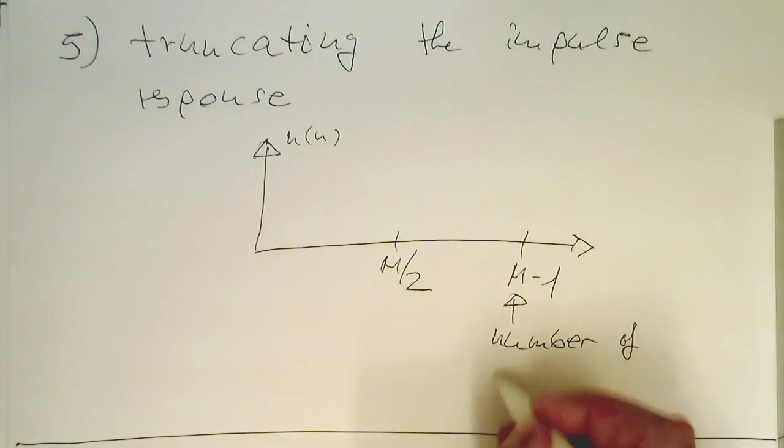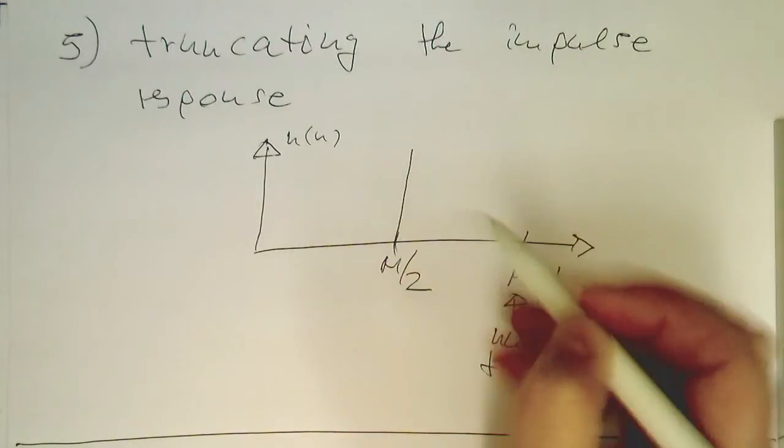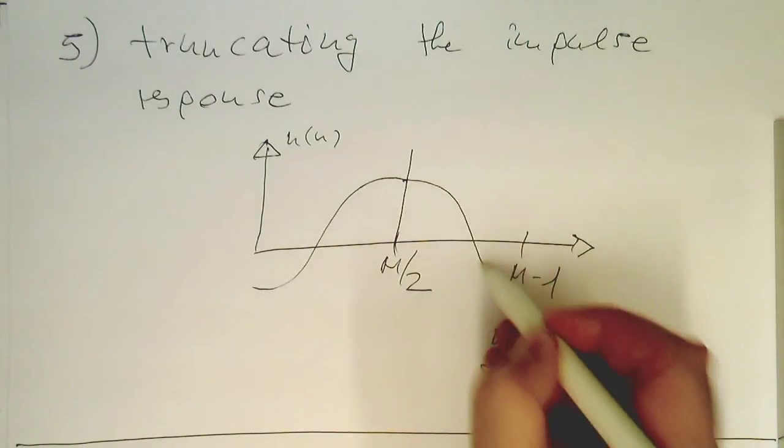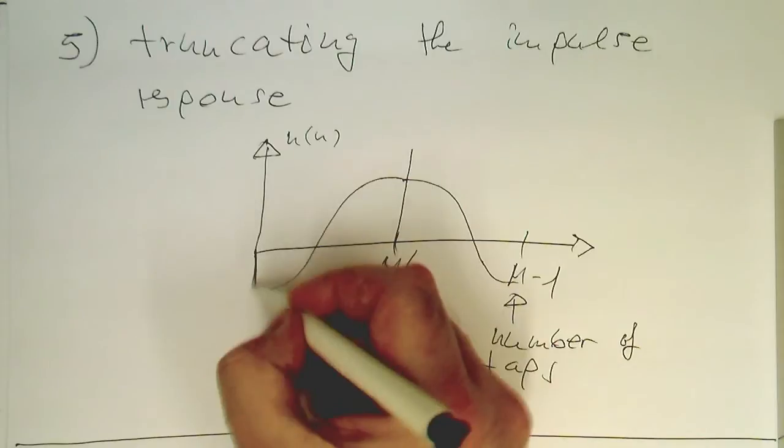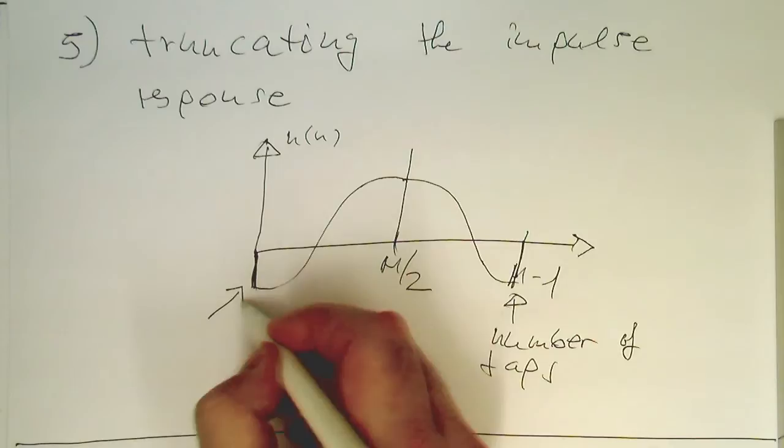M/2 gives us the symmetry point. What we do is just chop it off at this point here and truncate this here.